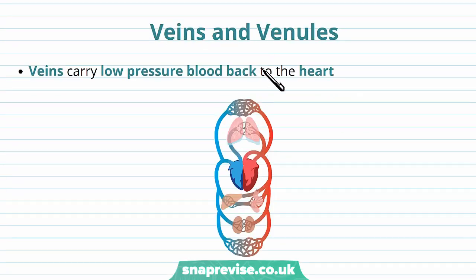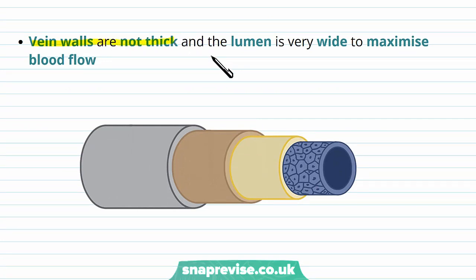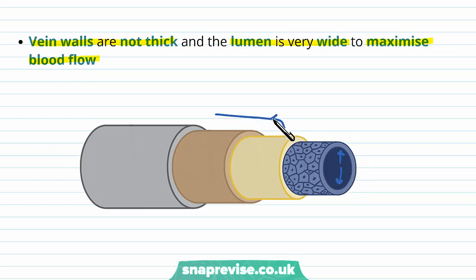Once blood has undergone all the exchange it needs to with the tissues, it needs to return to the heart — now full of carbon dioxide, with oxygen depleted and some nutrients consumed. Veins carry blood back to the heart but at low pressure, because the pressure dropped so much over the capillaries and there is no pump other than the heart. This low pressure flow happens first through the venules and then the veins. Vein walls aren't very thick because they don't need to withstand much blood pressure, but the lumen is very wide to maximise flow and get blood back to the heart as quickly as possible.